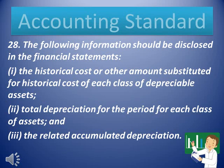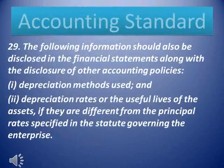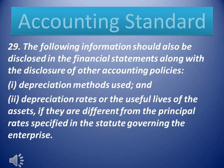Para 28. The following information should be disclosed in the financial statements: 1. The historical cost or other amount substituted for historical cost of each class of depreciable assets. 2. Total depreciation for the period for each class of assets. 3. The related accumulated depreciation. The following information should also be disclosed along with other accounting policies: 1. Depreciation methods used. 2. Depreciation rates or the useful lives of the assets, if they are different from the principal rates specified in the statute governing the enterprise.